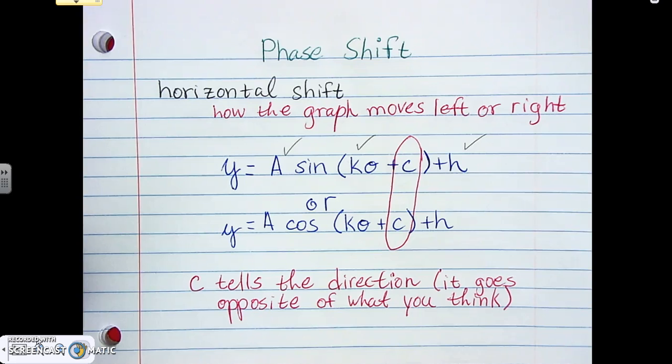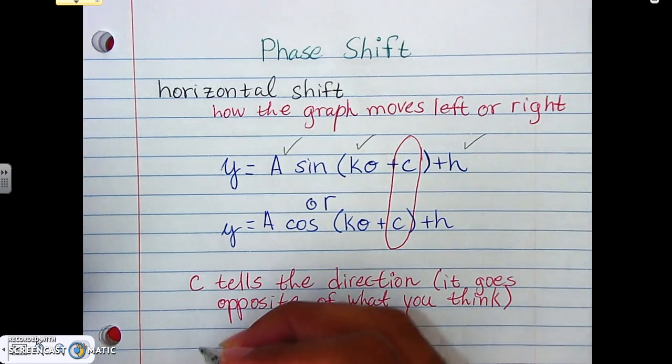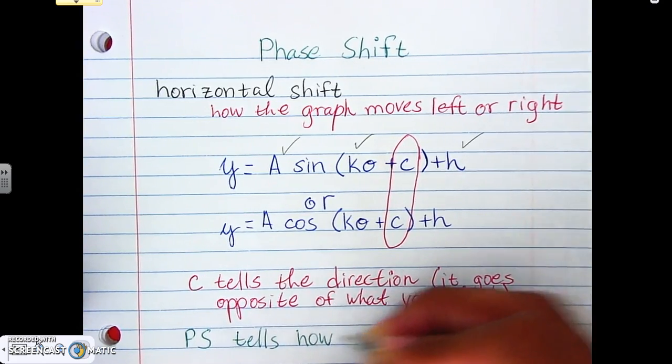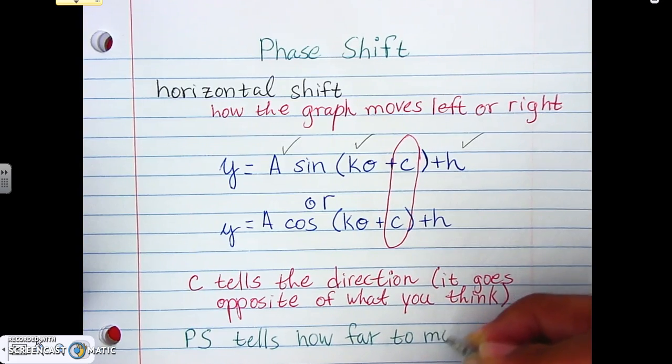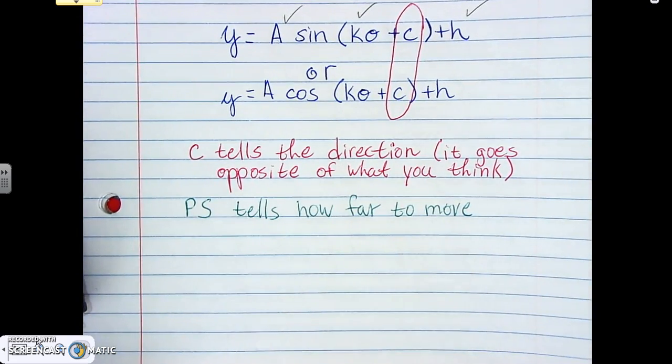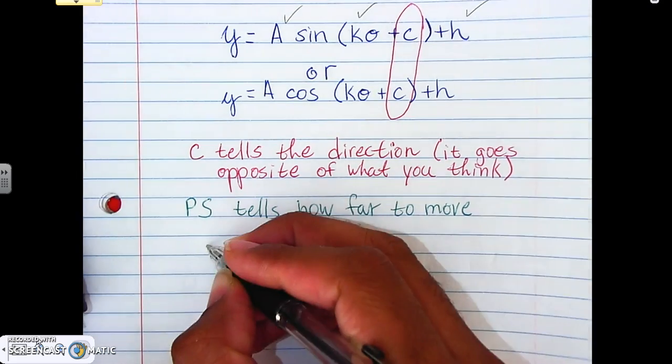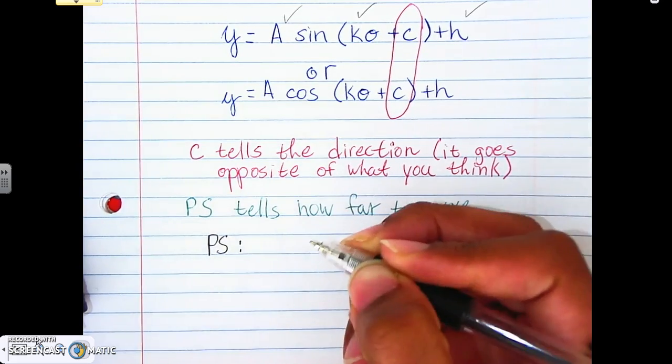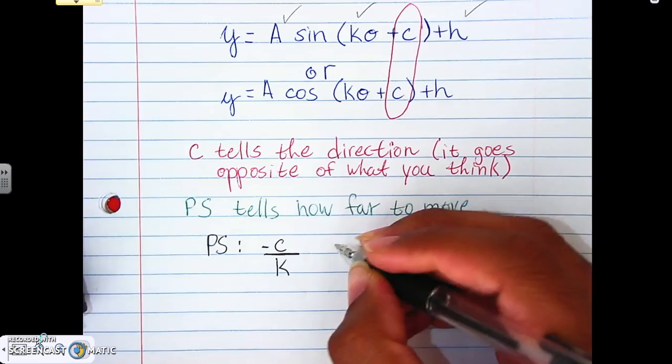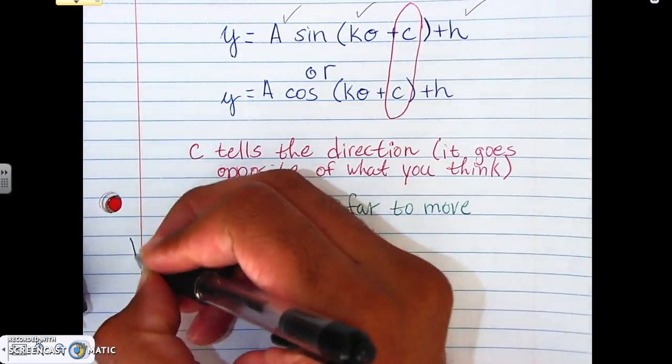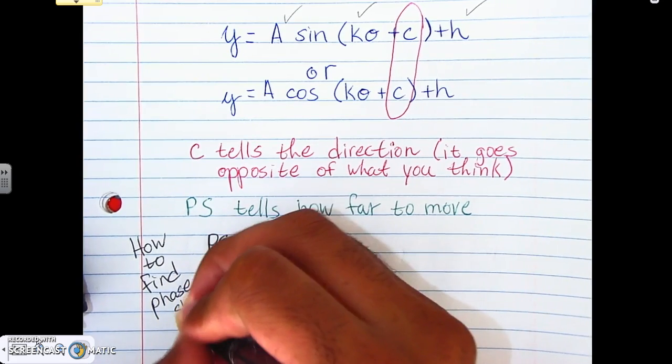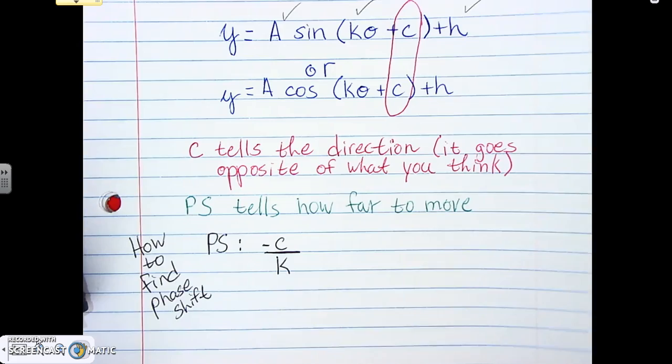So, the C tells the direction, but the phase shift tells how far to go. I'm going to abbreviate that as PS. That's phase shift. It tells how far to go. Or how far to move. Now, to find phase shift, we have one last formula. And I know, yeah, that's another thing. I'm sorry. But this is the only way that you can find phase shift that I know of. Phase shift is negative C over K. This is how to find phase shift.